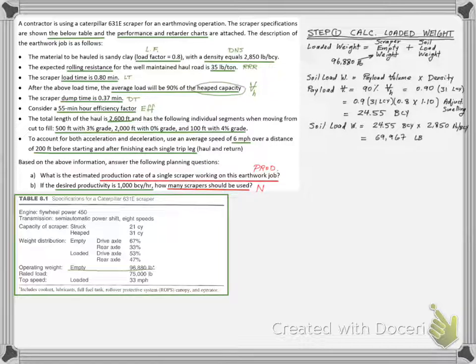We can now calculate the soil load weight to be around 70,000 pounds and then add it to the scraper empty weight to get the loaded weight.